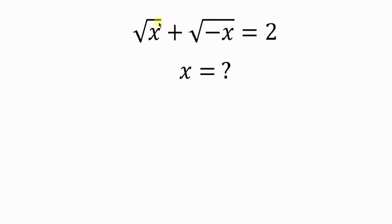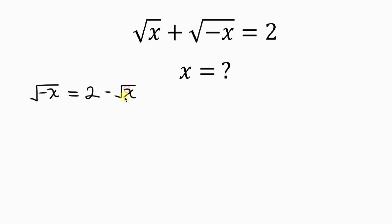Our first step will be to move the square root of x to the right hand side, so that on the left we have the square root of negative x equal to 2, and as the square root of x crosses to the right it becomes minus the square root of x.